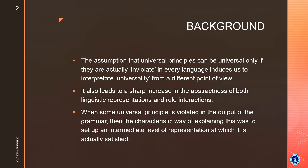These conditions cannot be violated, and that is why they are universal in nature — present in every language. It also leads to a sharp increase in the abstractness of both linguistic representations and rule interactions. When some universal principle is violated in the output of the grammar, the characteristic way of explaining this was to set up an intermediate level of representation at which it is actually satisfied.